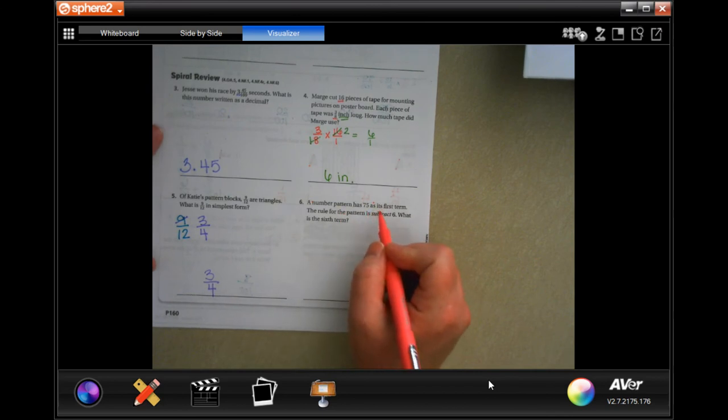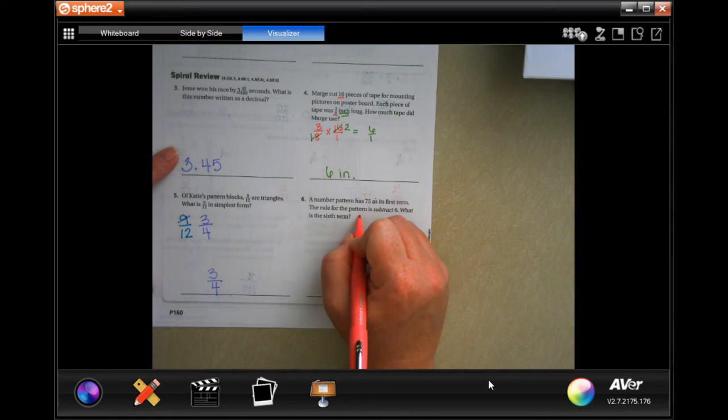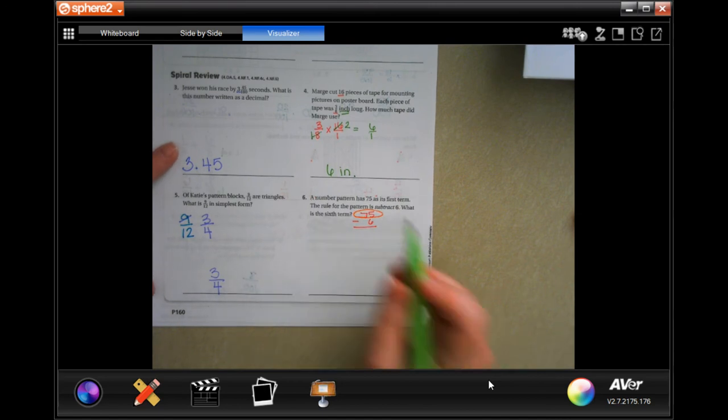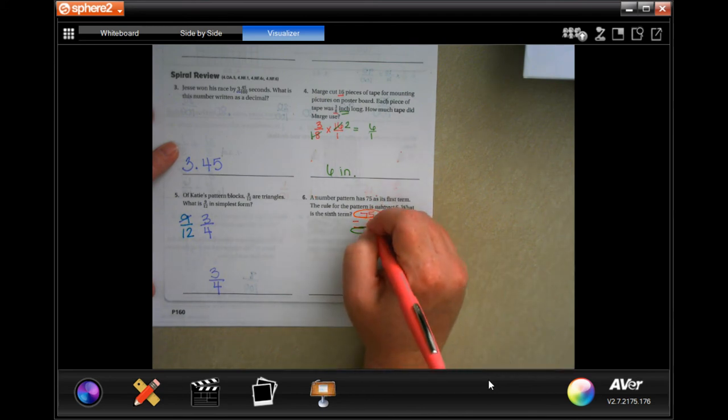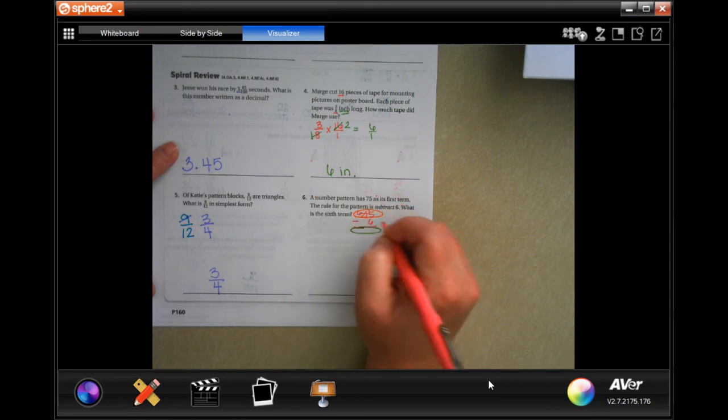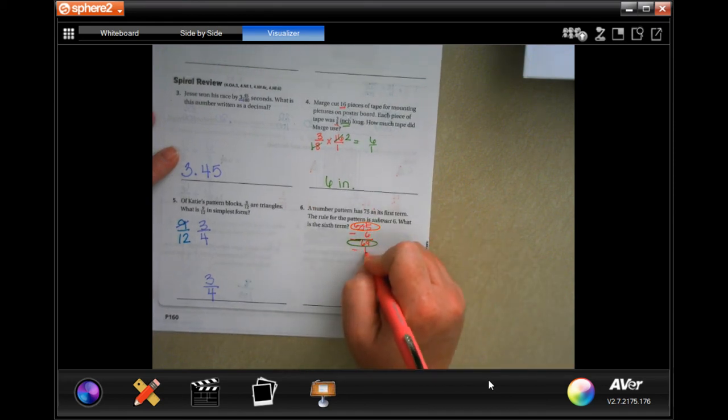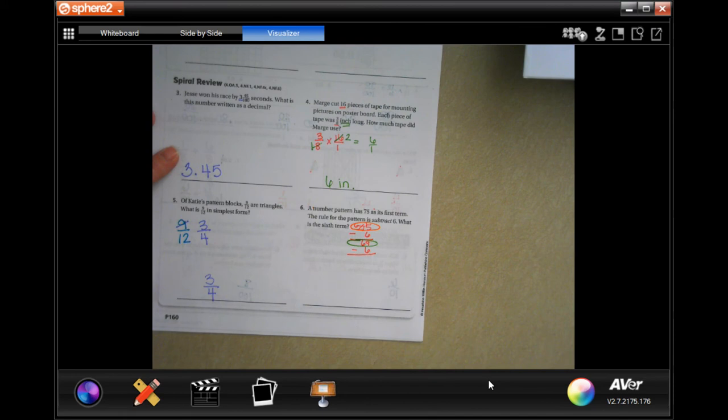A number pattern has 75 as its first term. The rule for the pattern is subtract 6. What is the sixth term? All right, so 75 minus 6, that's term number one. This will be term number two. Let's do it. Five can't take away six, fifteen minus six is nine, and six minus nothing is six. So now we subtract 6 and get 63.